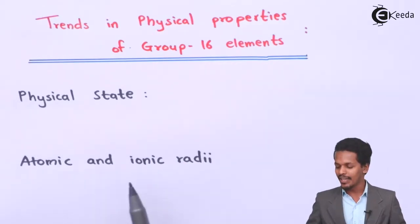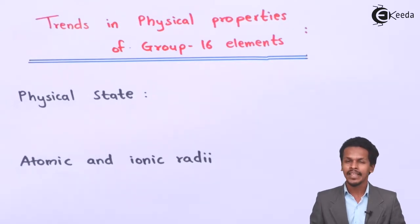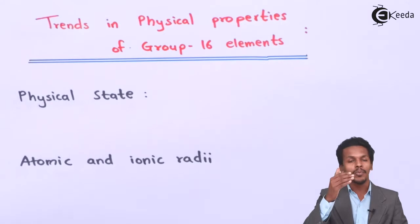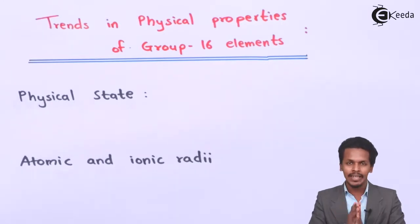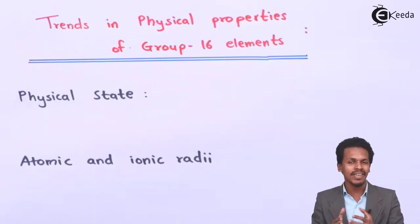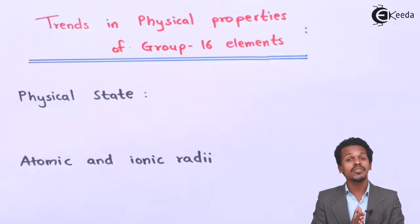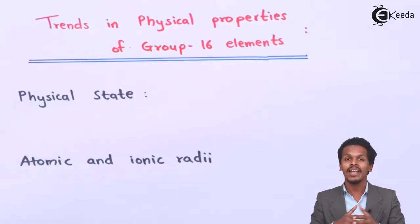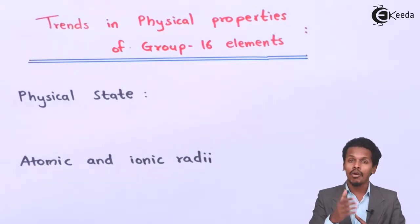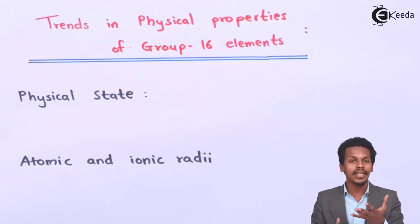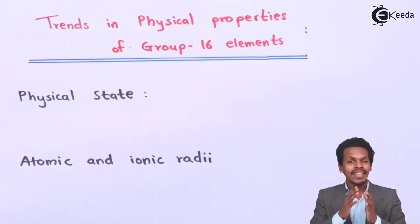The next point is atomic and ionic radii. As we move from top to bottom along group 16 elements, from oxygen as the first element to polonium as the last, the atomic number obviously increases. For example, oxygen has an atomic number of 8, and the atomic number of sulfur is 16.